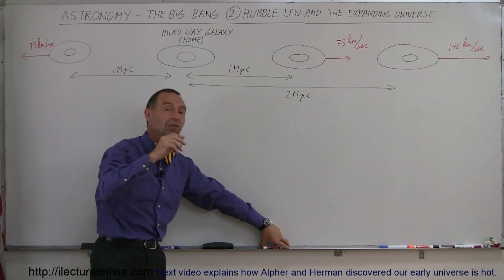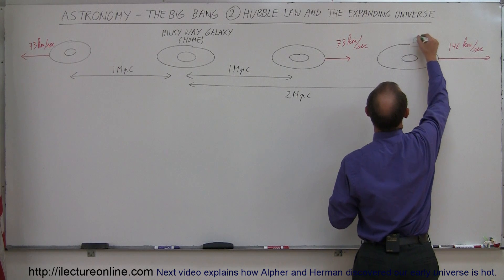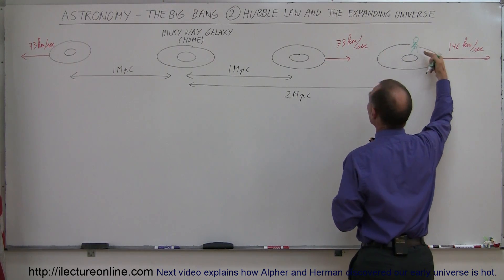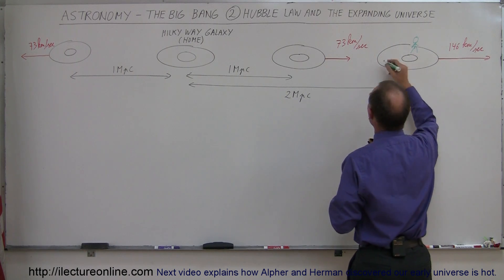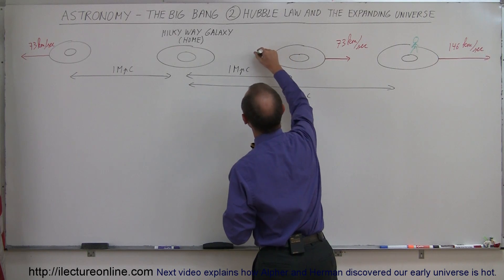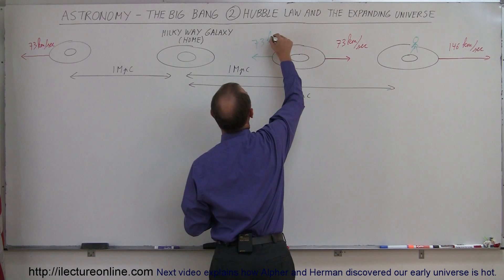Let's say that on some other galaxy, there's an Earth-like planet, and maybe on that Earth-like planet, there's an alien that lives on this galaxy. And this alien will be looking at the galaxies around him, and they'll look at this galaxy right here, being 1 megaparsec away, and that galaxy will appear to be moving away from him at 73 kilometers per second.